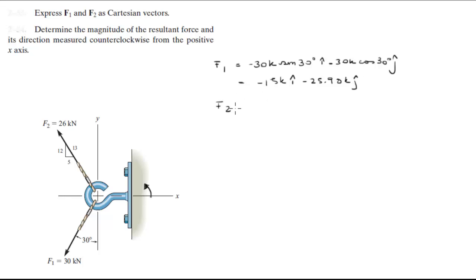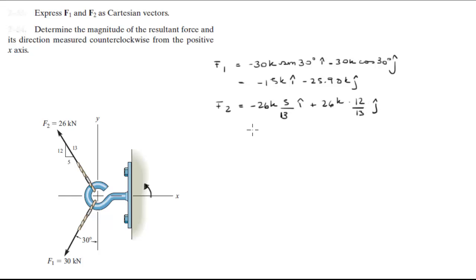F2 is negative 26k times 5 over 13 in the i-direction, plus 26k times 12 over 13 in the j-direction. When you calculate this, you get that it's equal to negative 10k in the i-direction plus 24k in the j-direction.